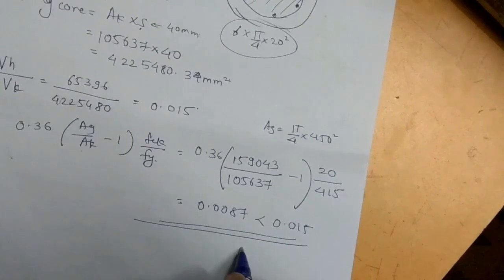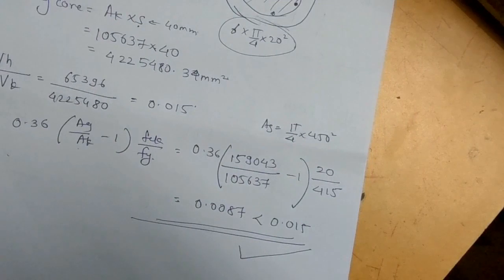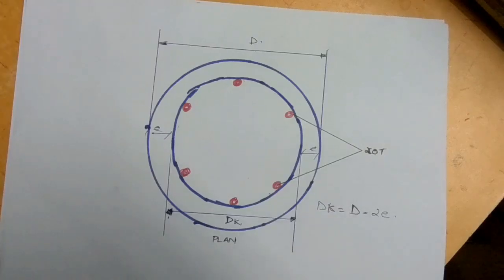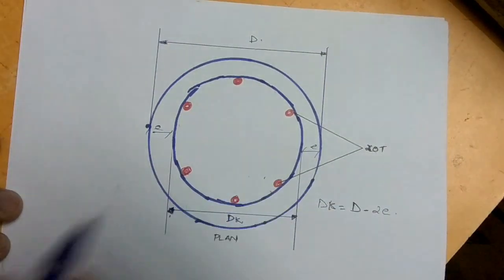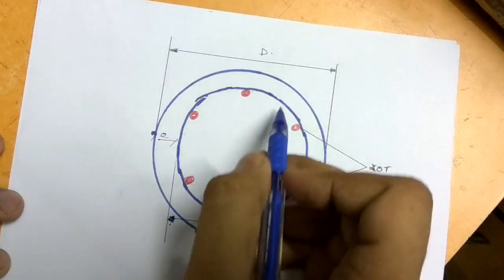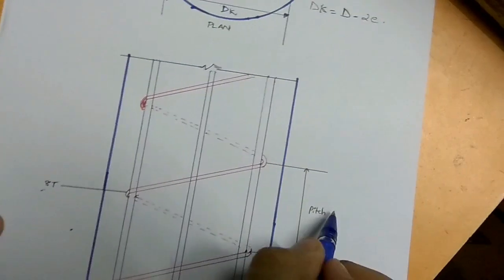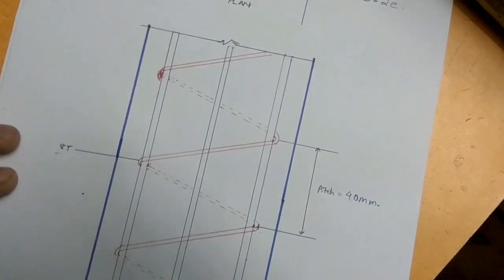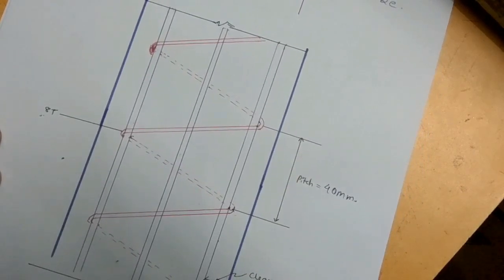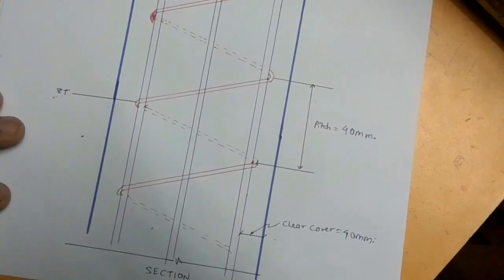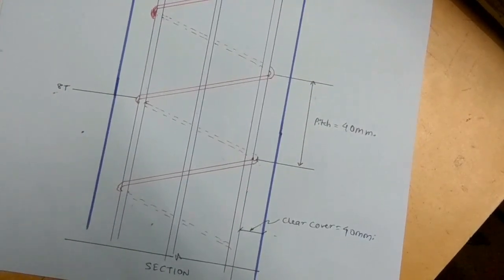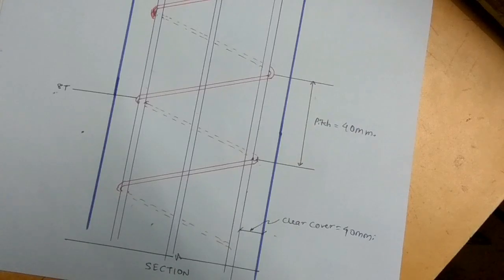Finally, the design diagram shows: in plan, six main bars of 20 mm diameter arranged in a circle, with the total column diameter D = 450 mm. The helical reinforcement is 8 mm diameter at a pitch of 40 mm, with a clear cover of 40 mm. That completes the design of helical reinforcement. Please post any questions in the comments, and let me know if you'd like more videos on design of reinforced structures.